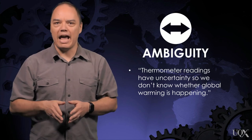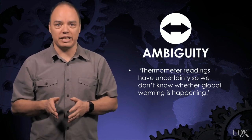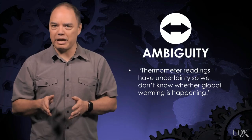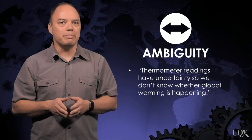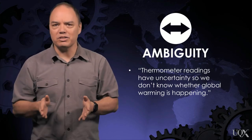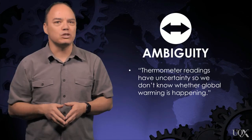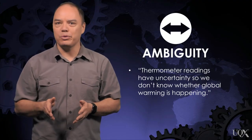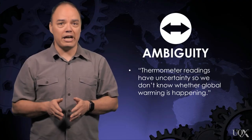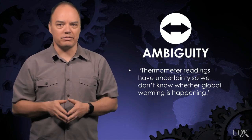In climate misinformation, ambiguity around the word 'uncertainty' is often exploited. When scientists talk about uncertainty, they mean a measurement is accurate within a well-defined range of values. For non-scientists, uncertainty means you're not sure if the measurement is right at all. This ambiguity can be exploited by arguing that when scientists express uncertainty, they don't know what's going on. That ends part one of our series on the techniques of science denial.